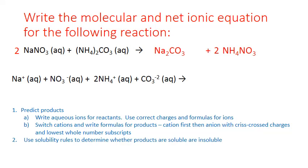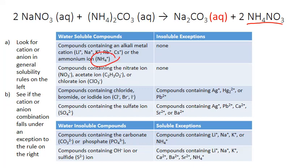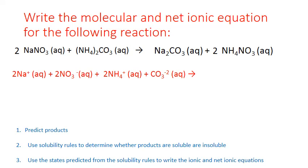Now use solubility rules to determine whether the products are soluble or insoluble. For sodium carbonate, sodium is an alkali metal cation — compounds containing it are water soluble with no exceptions, so it is (aq). For ammonium nitrate, ammonium is in the same row as sodium — ammonium-containing compounds are soluble with no exceptions, so it is also (aq).